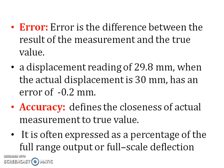Error is the difference between the result of the measurement and the true value. A displacement reading of 29.8 mm when the actual displacement is 30 mm has an error of minus 0.2 mm. Accuracy defines the closeness of the actual measurement to the true value. It is expressed as a percentage of the full range output or full scale deflection.